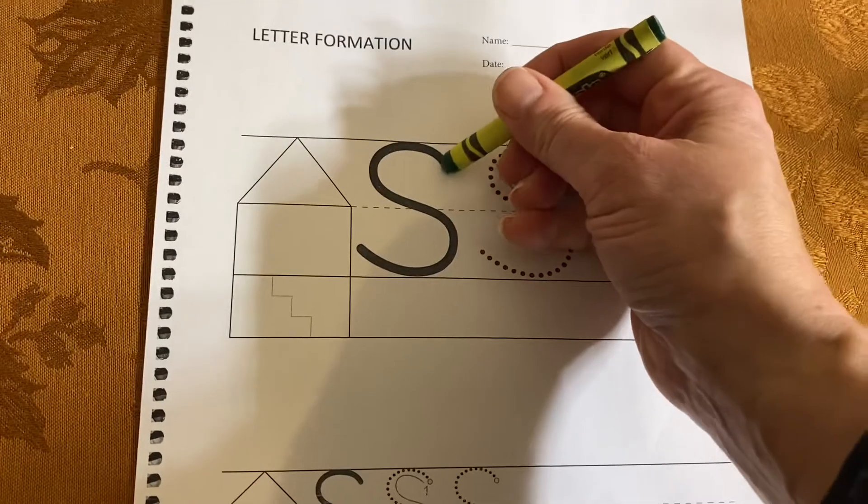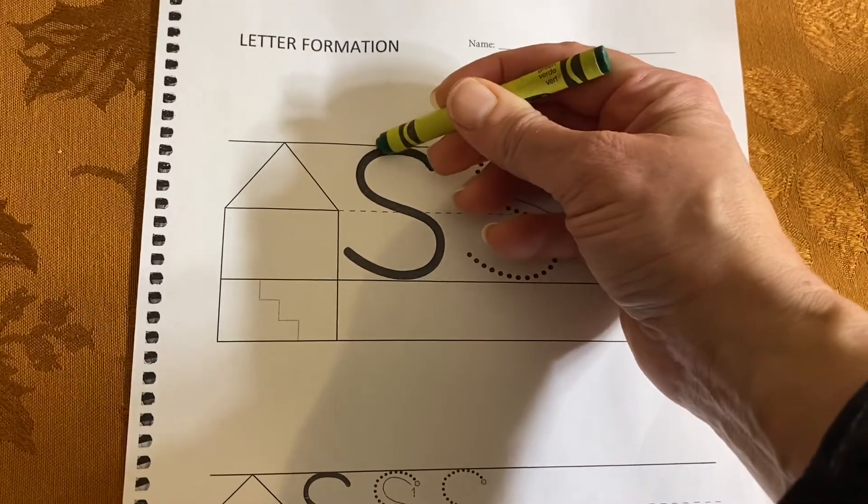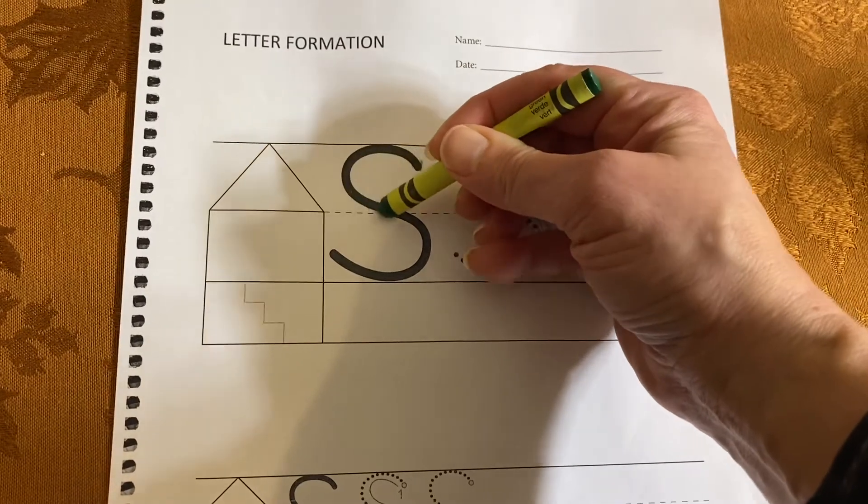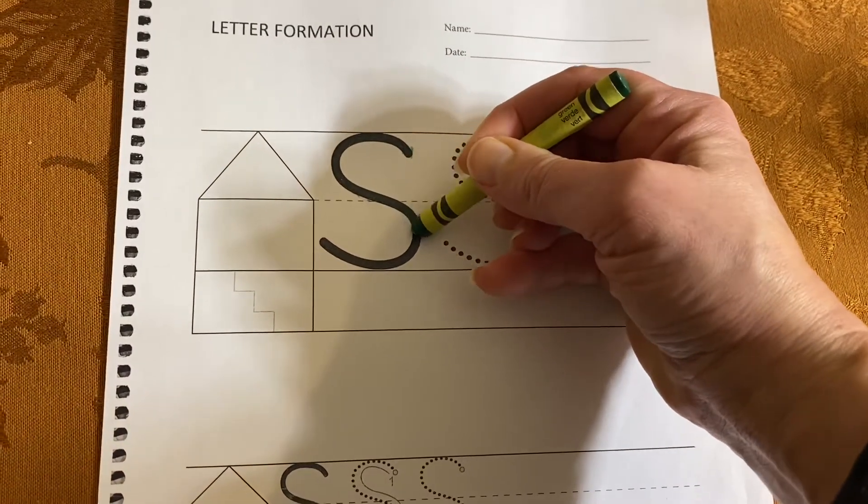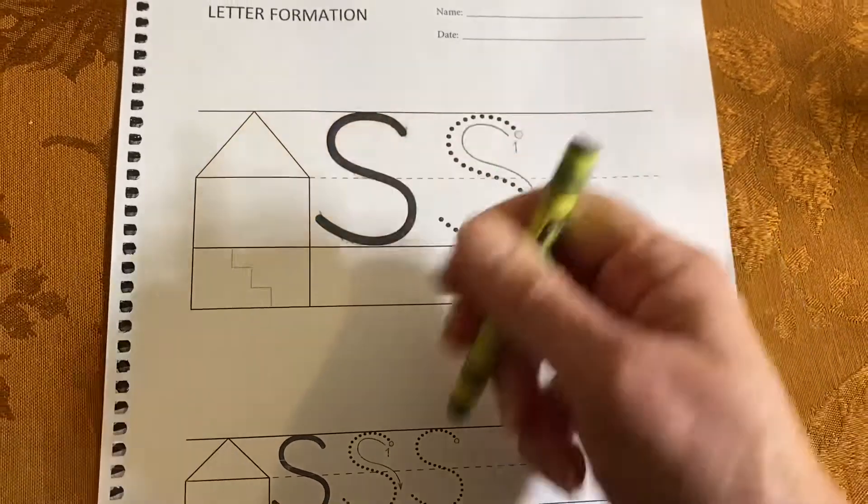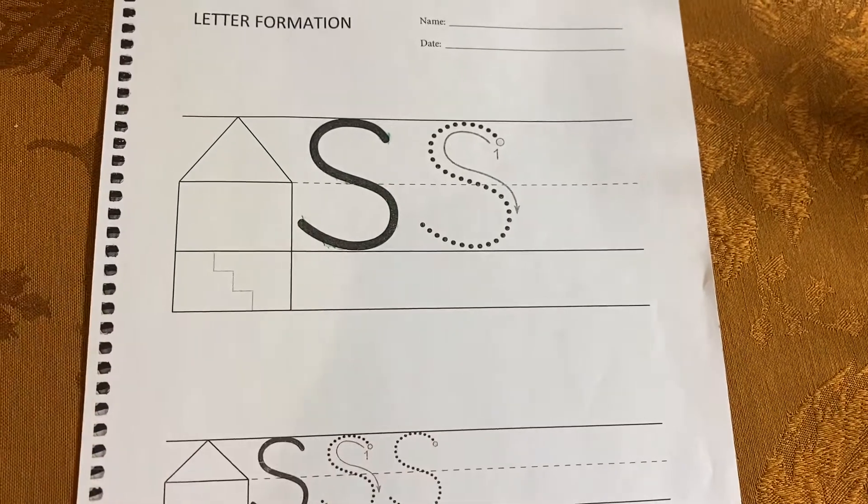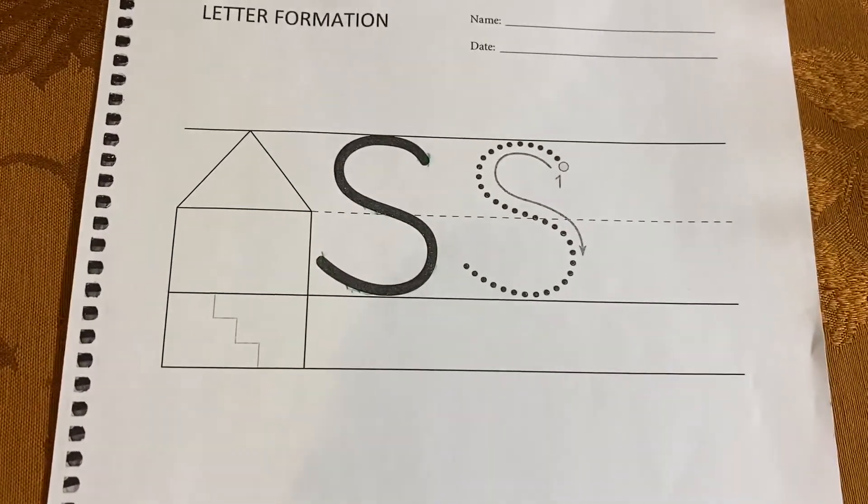We're starting at that two o'clock dot. When we come up, we touch the top line and scoop around, and then we come around the other way, touch the bottom line and scoop around. We end not on the bottom line but up a little bit. That is how we make the uppercase S.